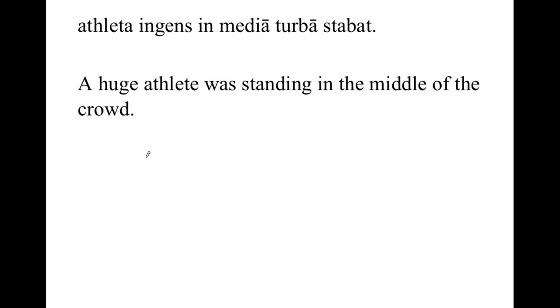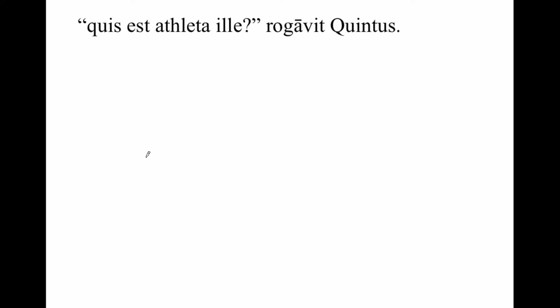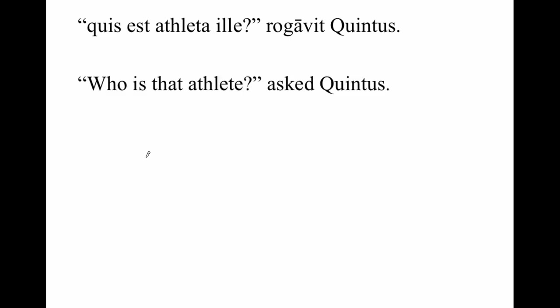Atleta ingens in media turba stabat. A huge athlete was standing in the middle of the crowd. Quis est atleta ille, rogavit Quintus? Who is that athlete? This word 'ille,' translated as 'that,' is an adjective describing 'atleta.' Atleta is a first declension noun, but it is masculine in this case because the athlete is masculine — the same as the noun 'agricola,' farmer. 'Ille' is the masculine nominative singular form of this adjective meaning 'that.'